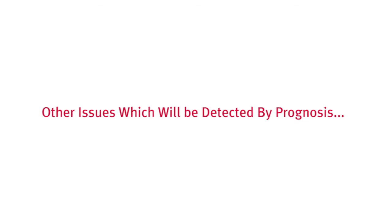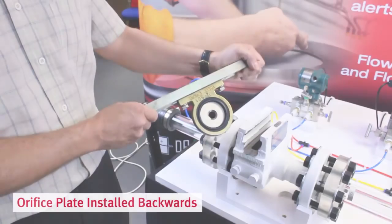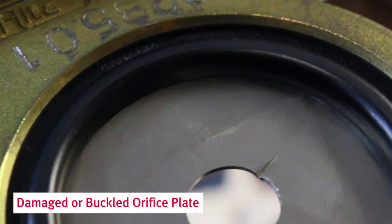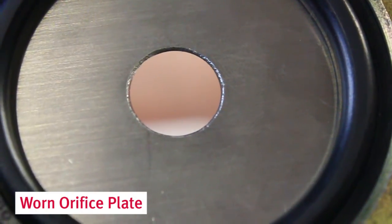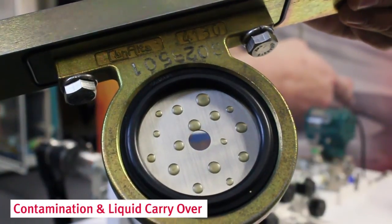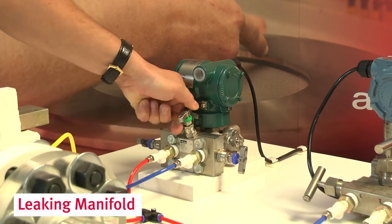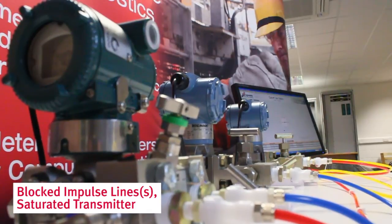Other examples of problems which produce an alarm with Prognosis are: backwards installed plate, damaged or buckled orifice plate, a worn meter, contamination and liquid carryover, a leaking transmitter manifold, blocked impulse line, or saturated transmitter.